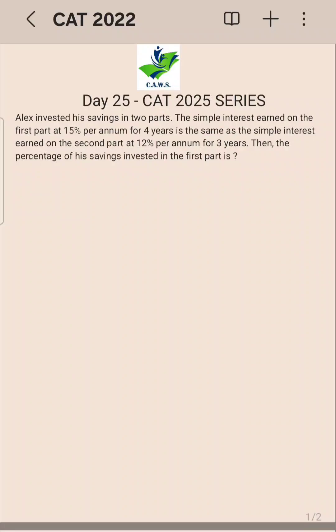This is a CAT 2022 question. It says Alex invested his savings in two parts. The simple interest earned on the first part at 15% per annum for 4 years is the same as simple interest earned on the second part at 12% per annum for 3 years. Then the percentage of his savings invested in the first part is...